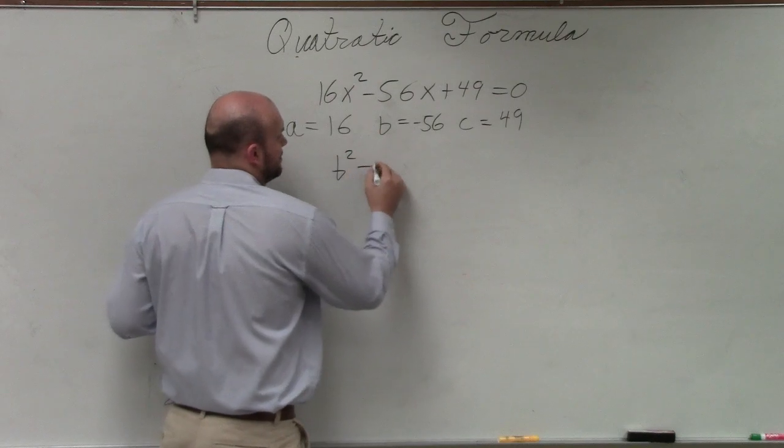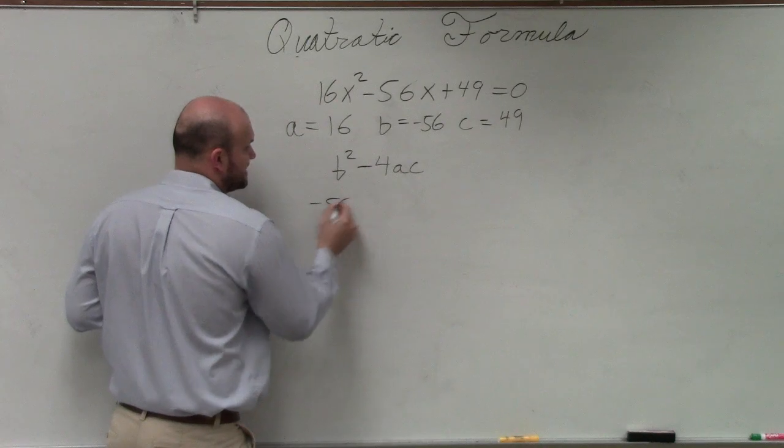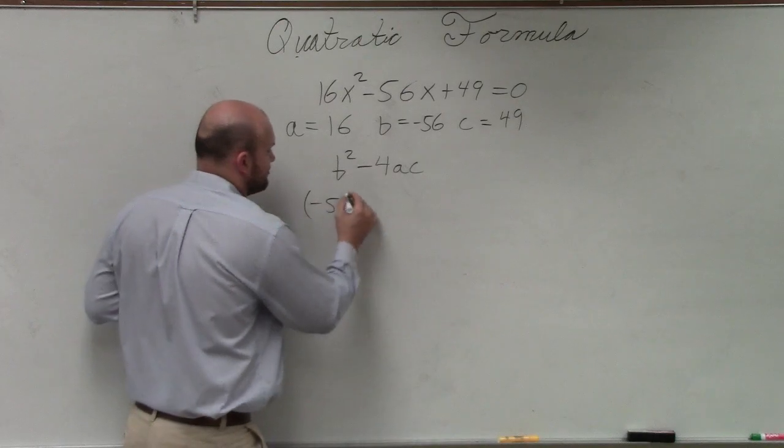it's b squared minus 4 times a times c. So I need to take negative 56. Now remember, when you're entering in numbers for a variable, please always use parentheses.